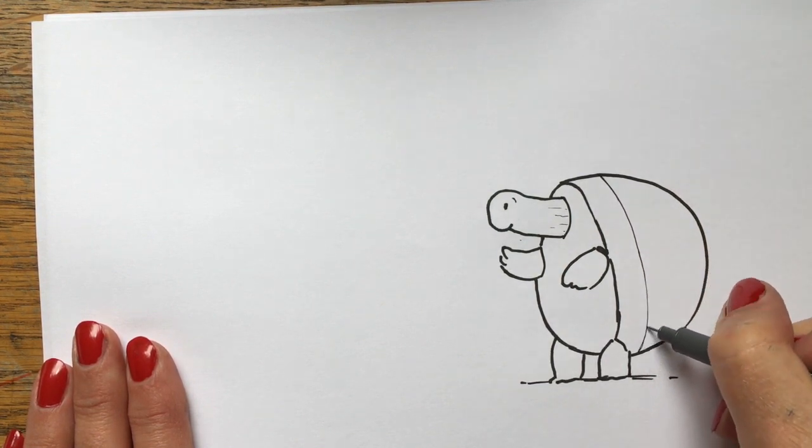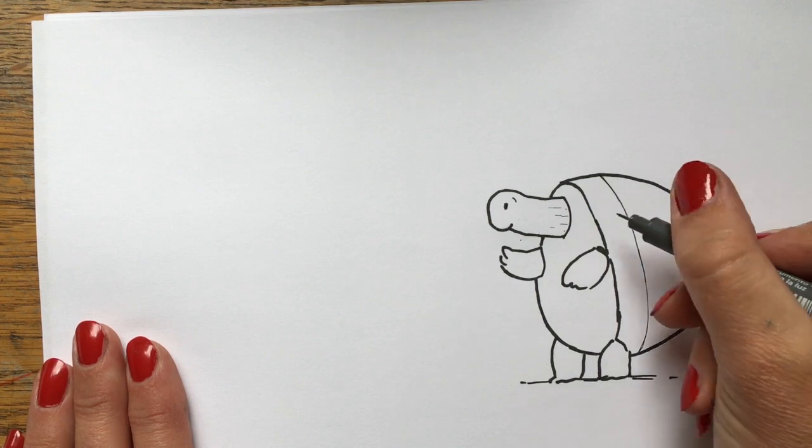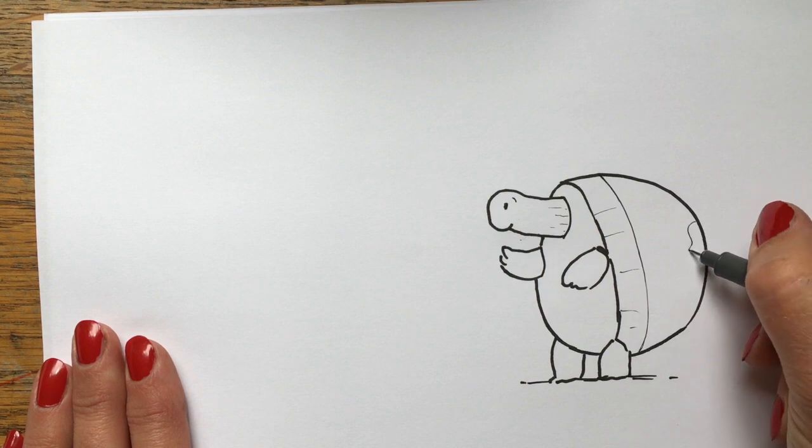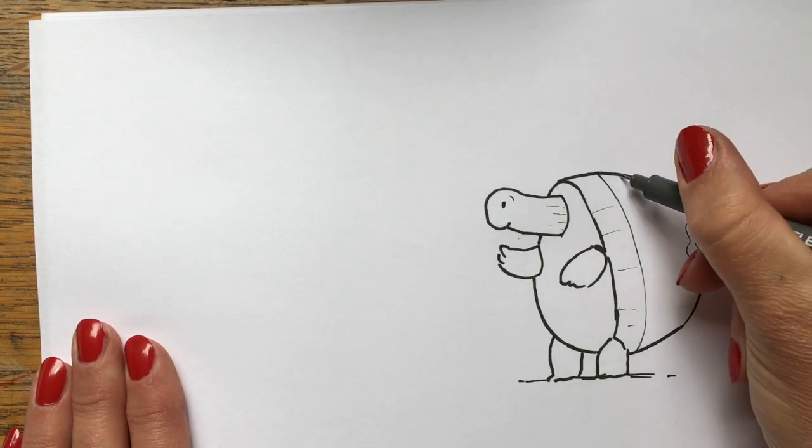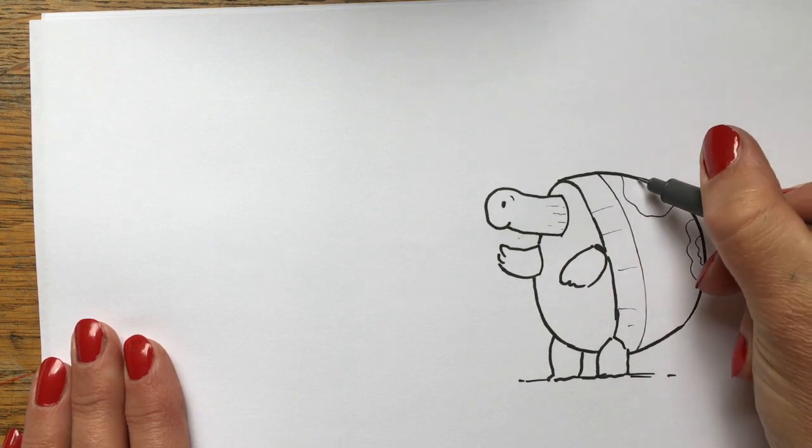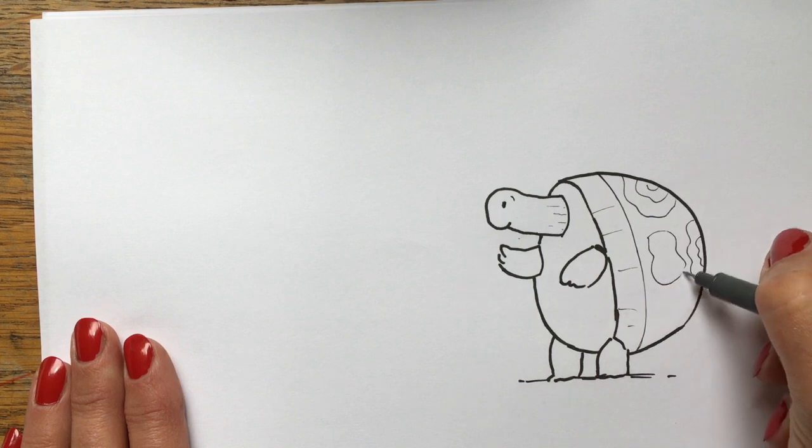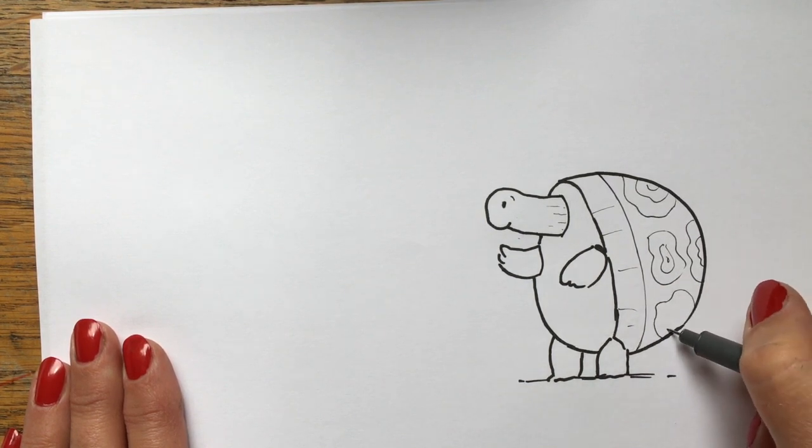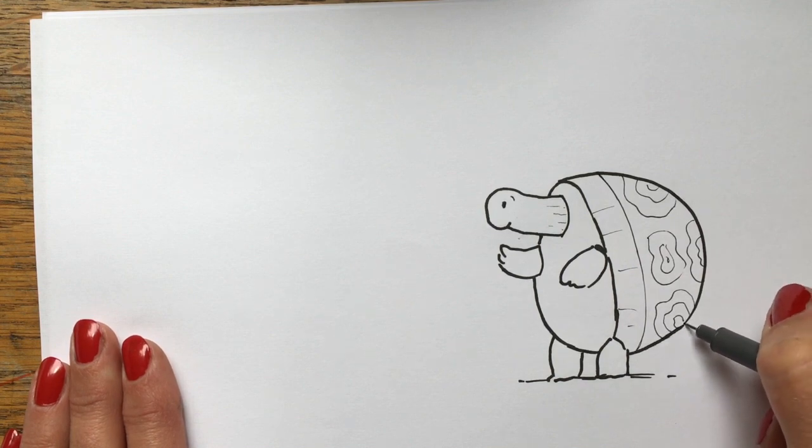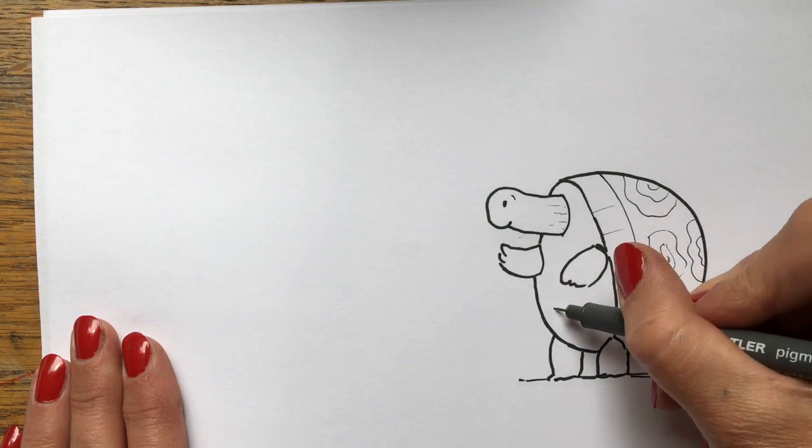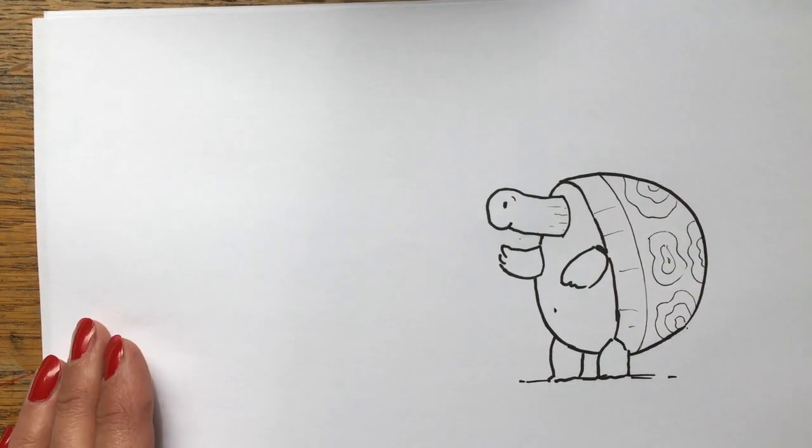And then the pattern on his shell. It's always nice to give your character a kind of pattern of their own that sets them aside from all the other tortoises you might see in the world or in books. So you know, that's the tortoise from the hug book. There we go. So that's this pattern. And maybe give him a belly button. There we go. I think he's finished.